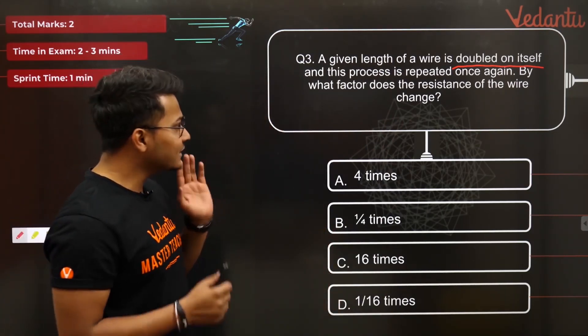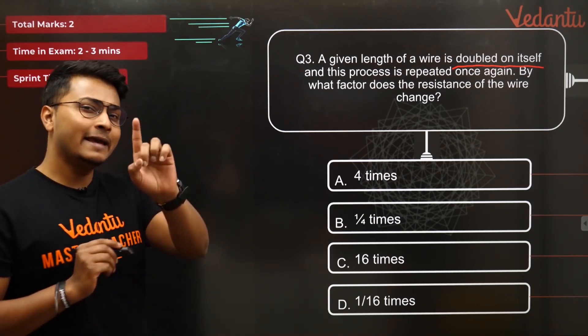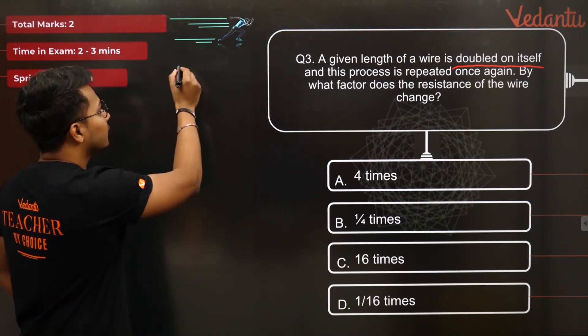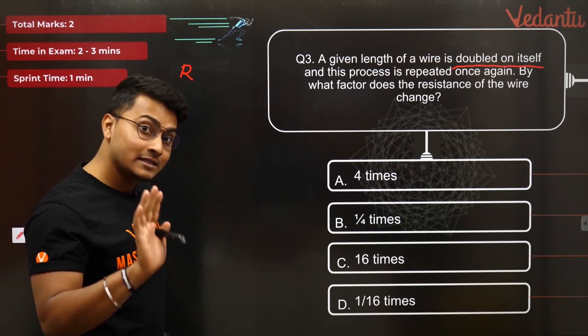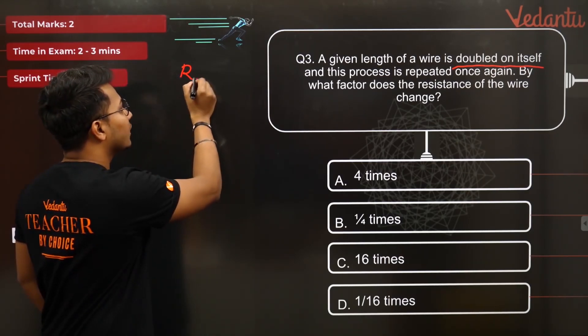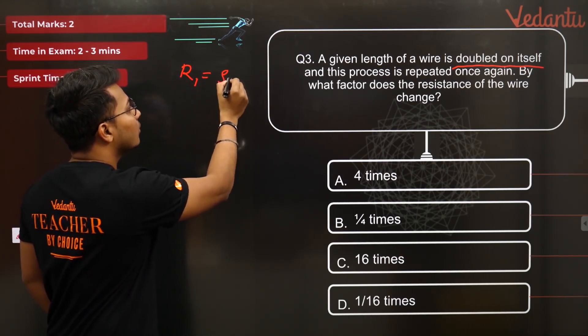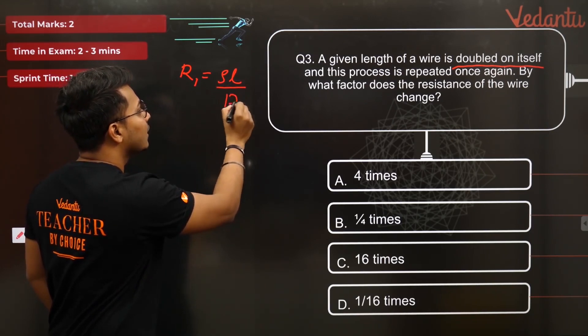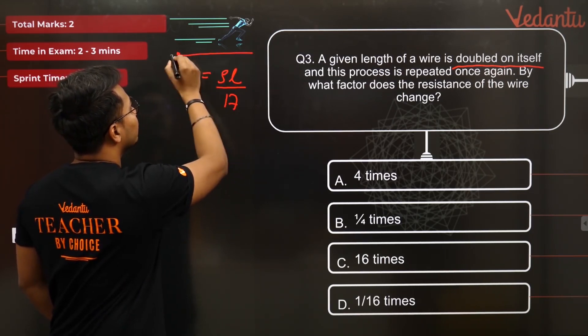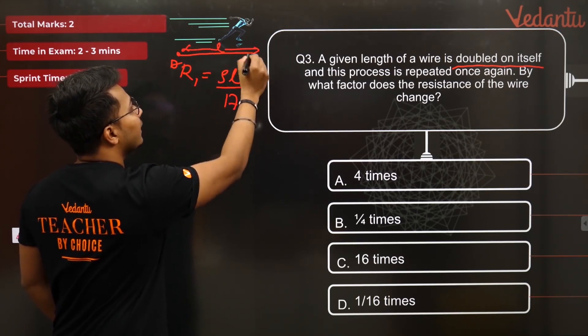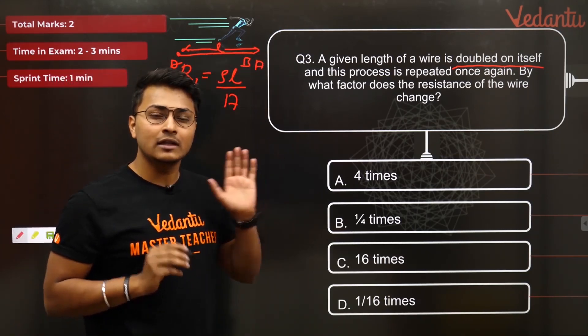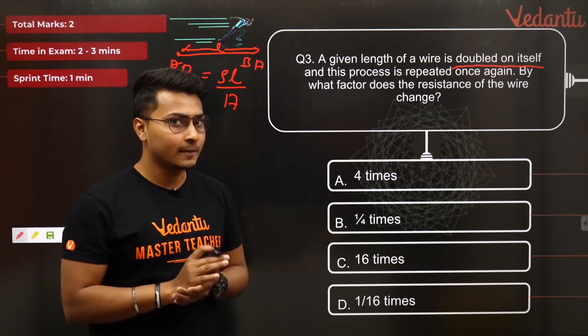I believe all of you guys understood that part. Let's try to write down two scenarios. Case one. Imagine before folding anything. The resistance of the wire, let me take it as R1, was equal to rho L upon A. A standard wire, length of L, and area of A. Nothing. The standard formula R is equal to rho L by A.